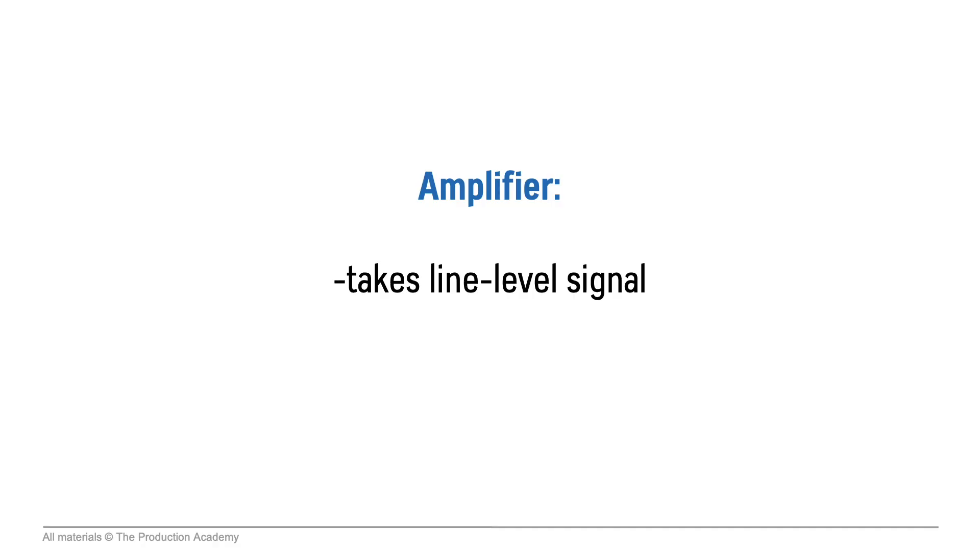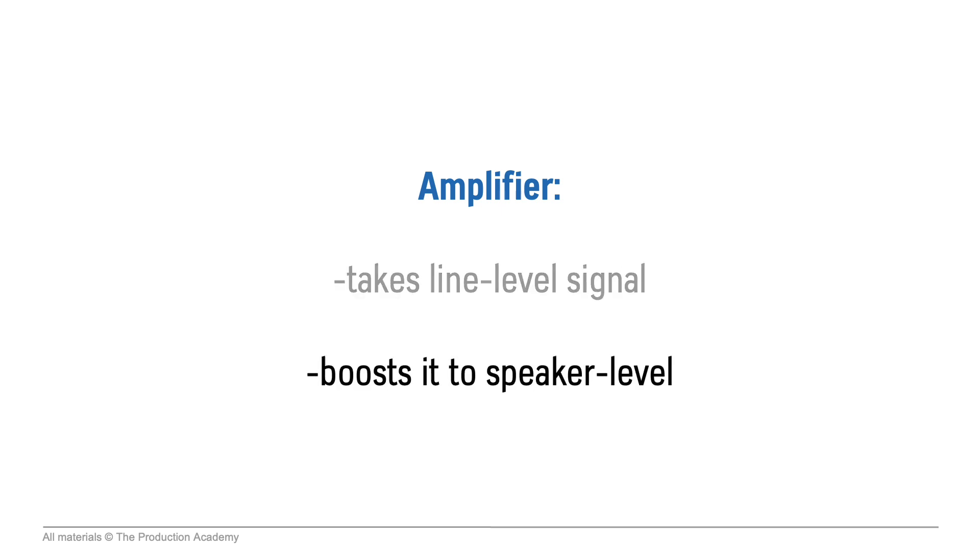After the system processing we need to power the speakers, which requires a really strong signal. We get this from an amplifier which takes a line level signal and boosts it to speaker level. Even with small powered speakers like these QSC ones, we still need all the processing — it's just built right into the actual speaker. They still use a crossover, limiter, and amplifier, but they take a line level signal directly from the mixing console.